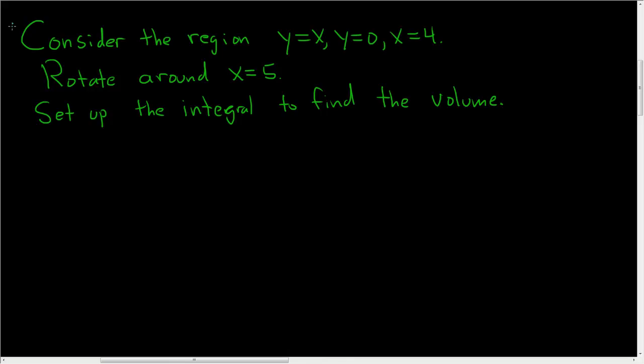Consider the region y equals x, y equals 0, and x equals 4. We're going to take this region and rotate it around the line x equals 5. And the question is asking to set up the integral to find the volume of the resulting solid we get after we rotate this region around x equals 5.